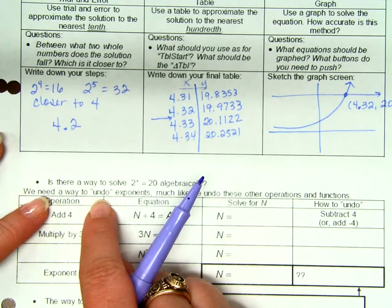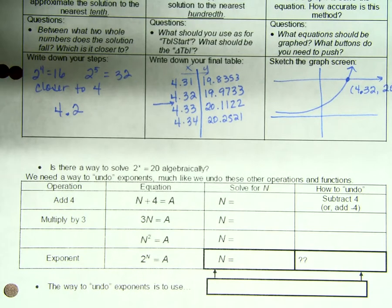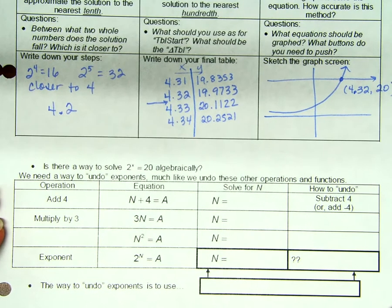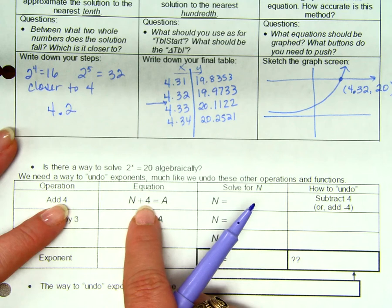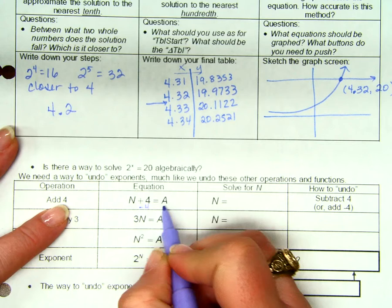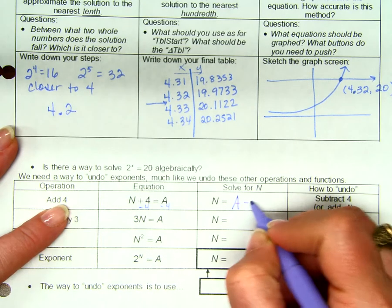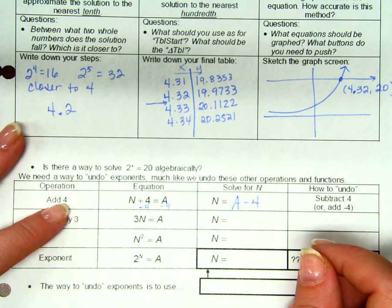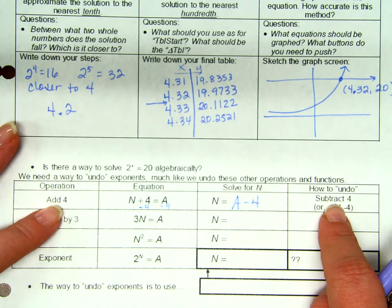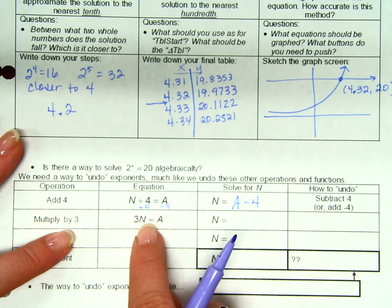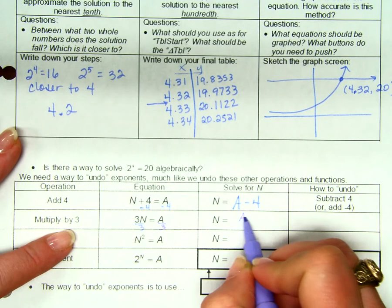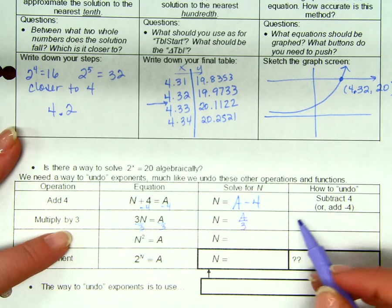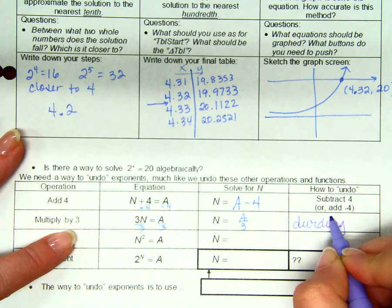Okay. Here's the deal. We need a way to undo exponents, just like we have other ways to undo other operations that we have. Like, if this is the equation, n plus 4 equals a, and I'm trying to solve for n, how do I undo the adding 4? How do I do that? I minus 4. I subtract 4 to get n equals a minus 4. The undoing of adding is subtracting, right? Well, what if I'm multiplying by 3 and I want to solve for n? How do I undo that multiplication? So if I divide by 3, I get n equals a over 3. And I undid the multiplication by dividing, right?